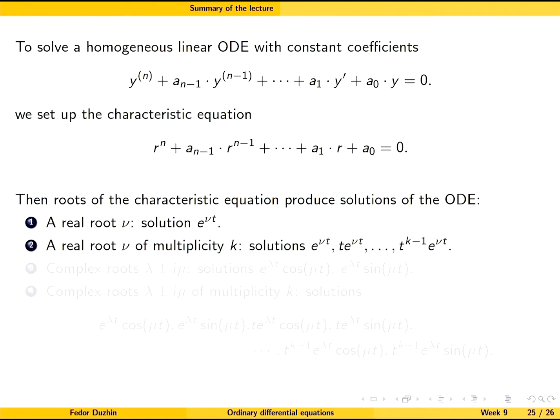Complex roots work similarly, but they appear in pairs of complex conjugates. Each pair of complex conjugate roots gives us two solutions of the differential equation, which are combinations of exponential and trigonometric functions.